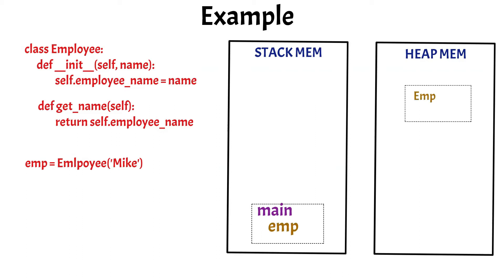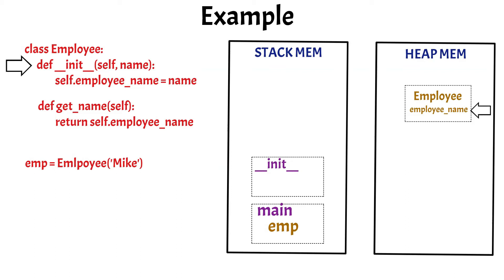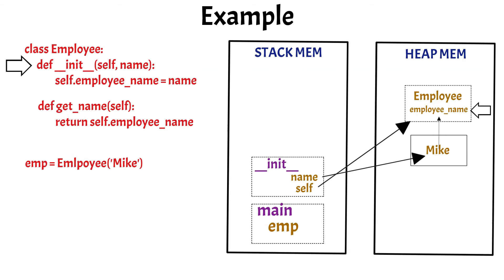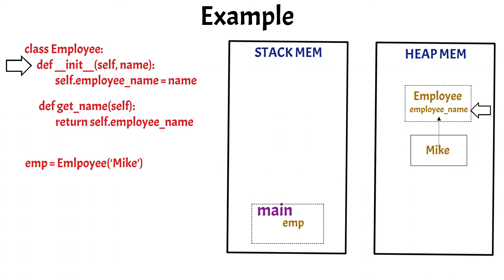Then the employee object is created in the heap memory. Along with the creation of the employee object in the heap memory, the constructor of the class is immediately executed, which is the __init__ method. Due to this, a new stack is created in the stack memory for the init method execution. This also creates the instance variable in the employee object stored in the heap memory, and then the init method initializes the instance variable by storing the employee name Mike in the heap memory. Once all the objects are created and mapped, the init stack will be removed from the stack.